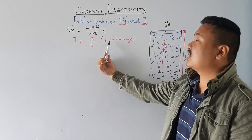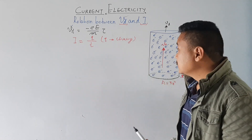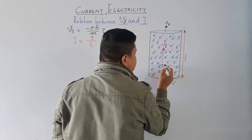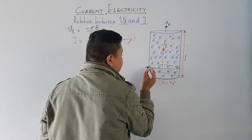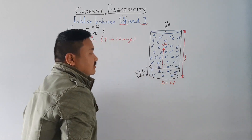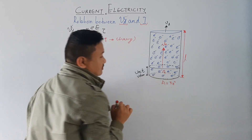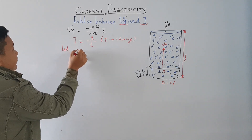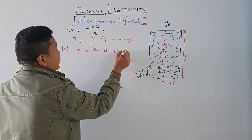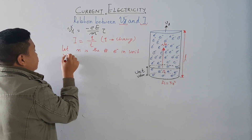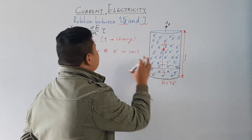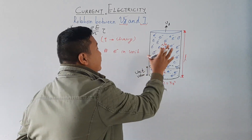I want to find the relationship between drift velocity and the current. To find the charges in this conductor — since current is charge by T — I am considering a small portion. Let this small portion be my unit volume in which there are N number of electrons. So, N is the number of electrons in unit volume.